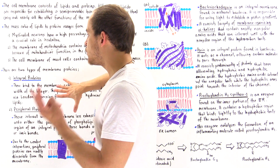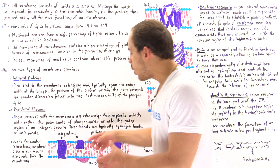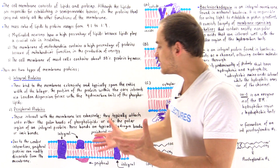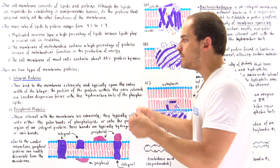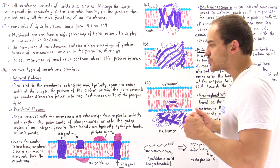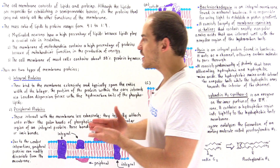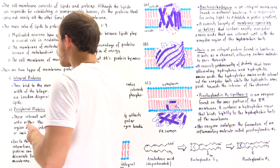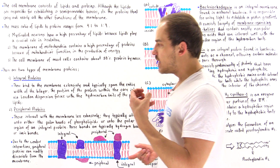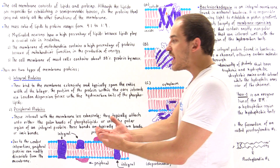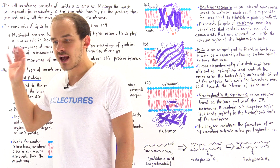So, integral proteins come in two types: transmembrane proteins that span the entire membrane, and integral proteins that only partially interact with the hydrophobic region without spanning the entire membrane. In either case, these integral proteins are attached permanently via strong hydrophobic nonpolar interactions. Changing the pH or adding salt cannot cause their dissociation, whereas peripheral proteins — which interact only via polar regions — can dissociate when pH is changed or a salt solution is added. We'll focus on this in much more detail in a future lecture.